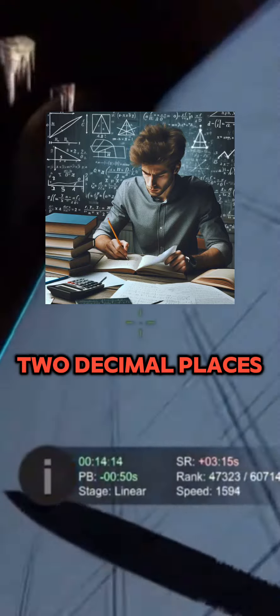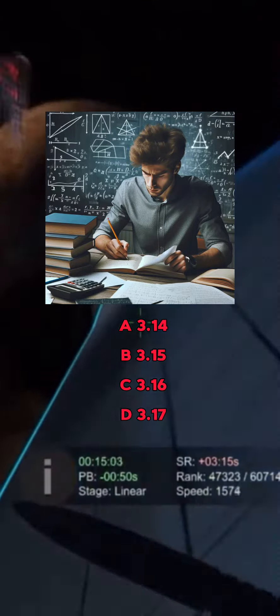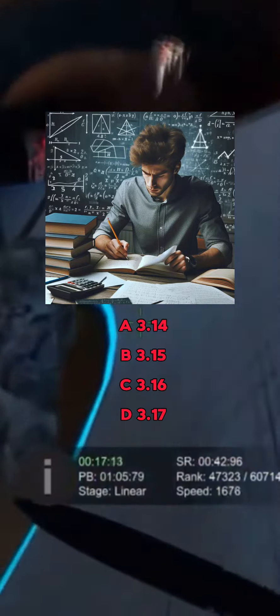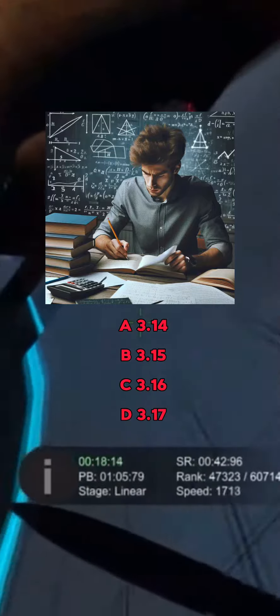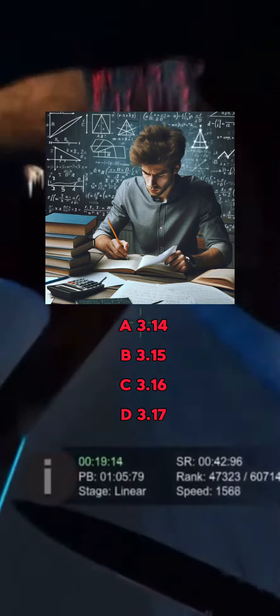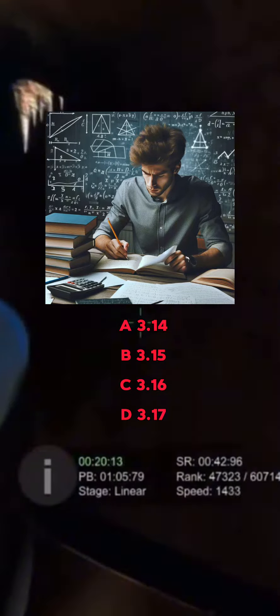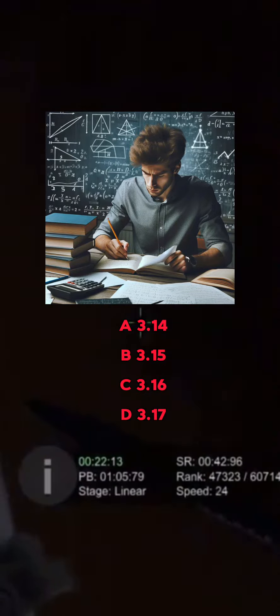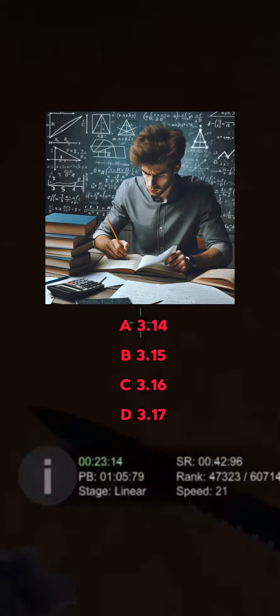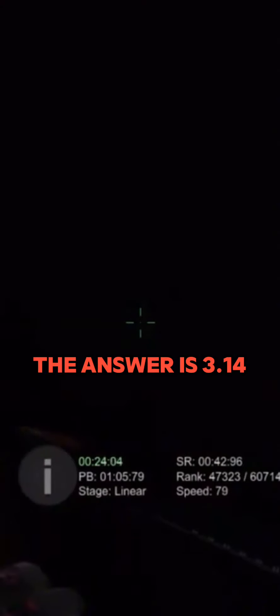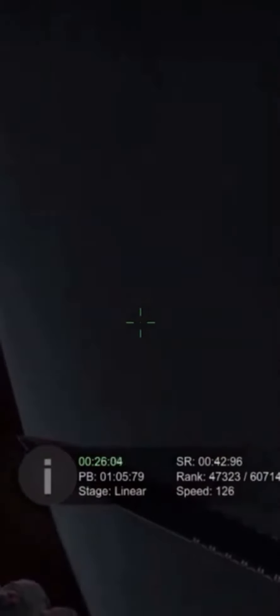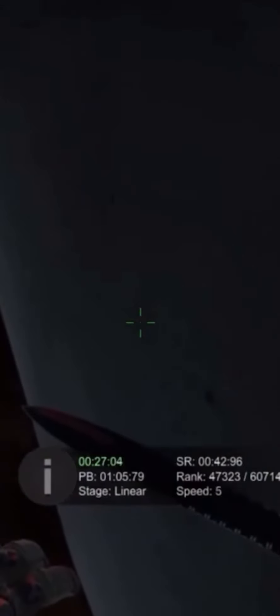What is the value of pi up to two decimal places? A. 3.14, B. 3.15, C. 3.16, D. 3.17. The answer is 3.14.